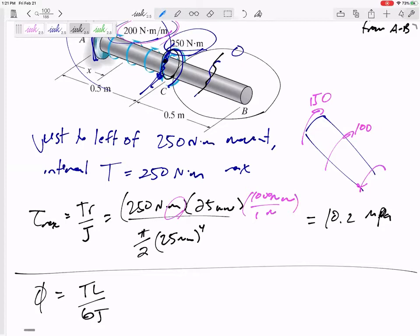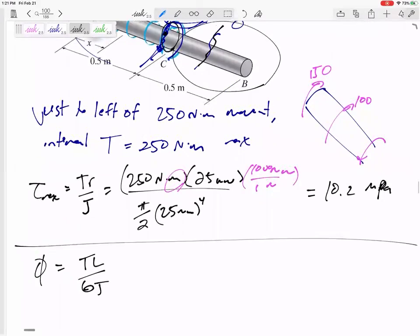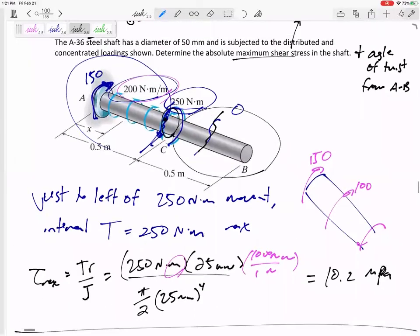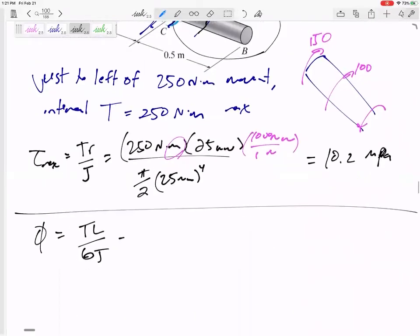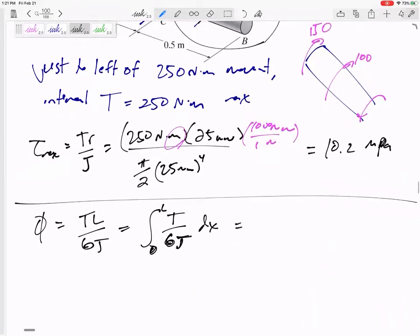Because there's no torque inside BC, you can add up TL over GJ, but if your T is zero, then there's no contribution from section C to B. But from section A to C, let us calculate that angle of twist. When you have a distributed load, then this internal torque - what is the torque right here? About 170. What's the torque right here? About 190, 200, 210. When it's changing like that, we can't just do TL over GJ. We have to do the integral of T over GJ from as X goes from zero to L.